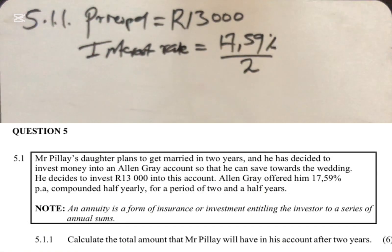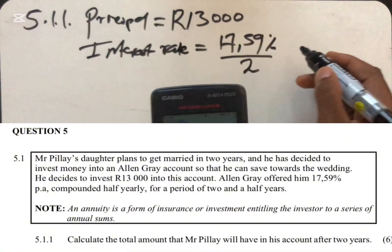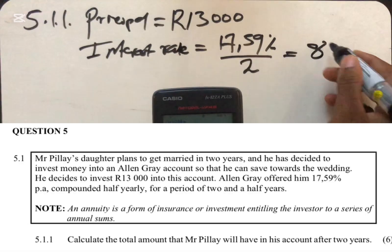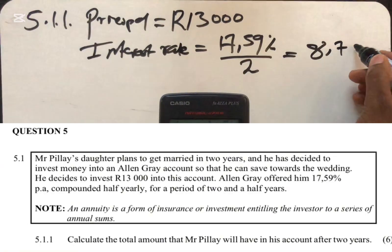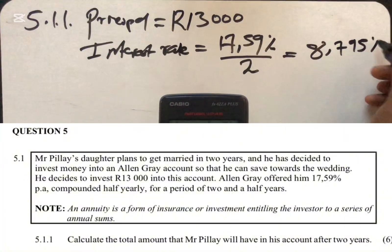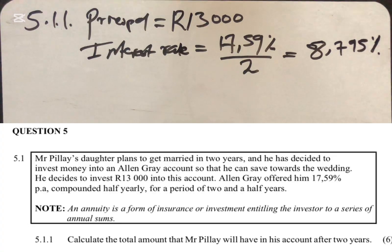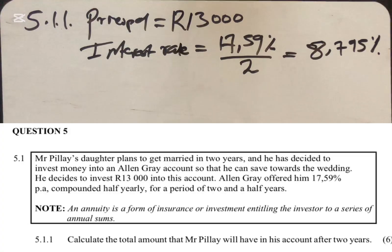That gives us 8.795%. Avoid rounding this off — just write it as it is. Each and every six months this person will be receiving 8.795% because it is compounded half yearly.